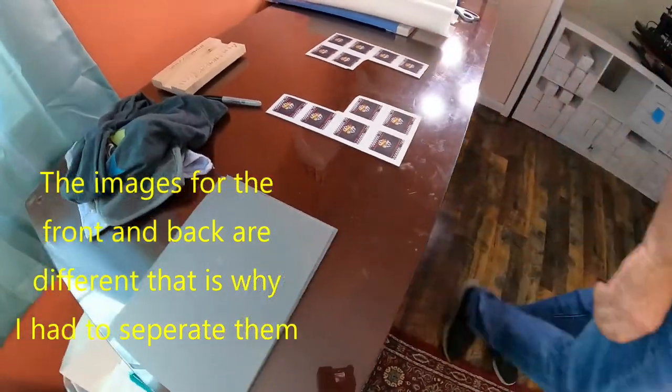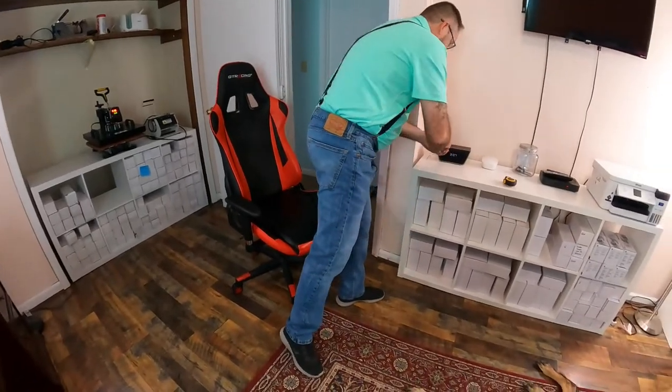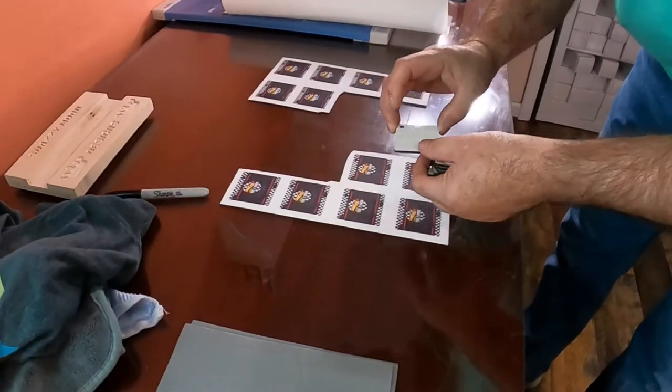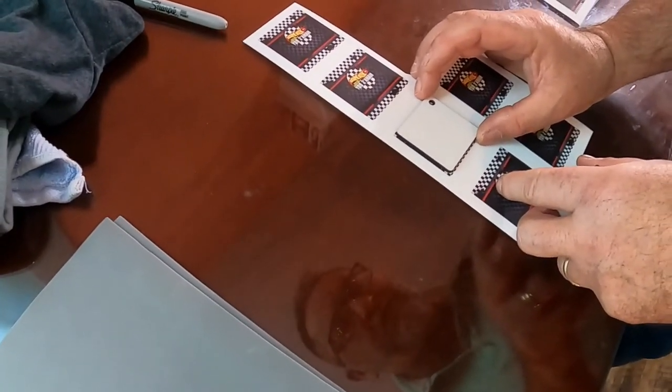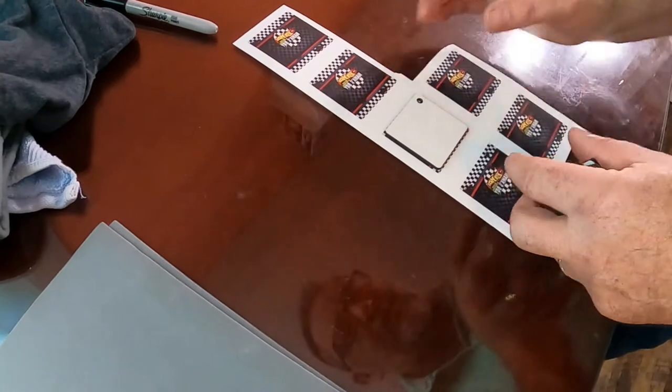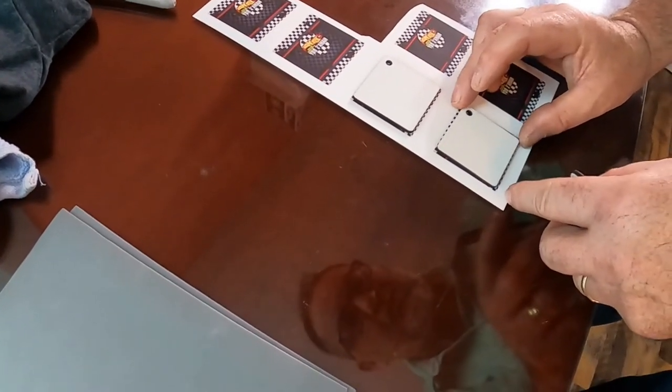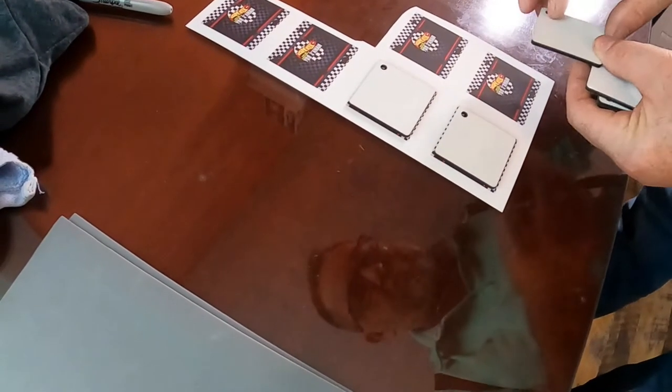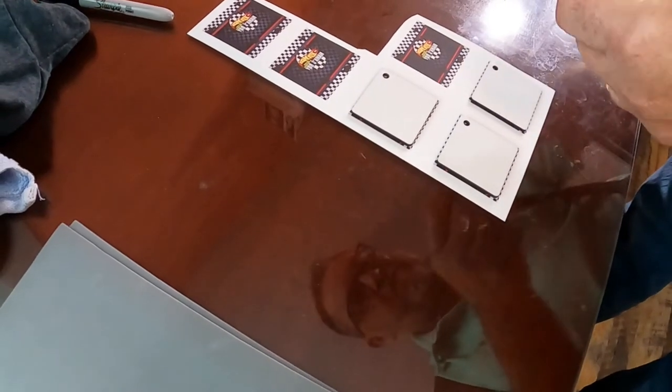So now we've already peeled the plastic off of our sublimation keychain blanks. All we have to do is set them on here. It's okay that our image is a little bit bigger than the actual keychain because that's what we want. That way it's completely covered and you don't have to worry about any white around the edges.